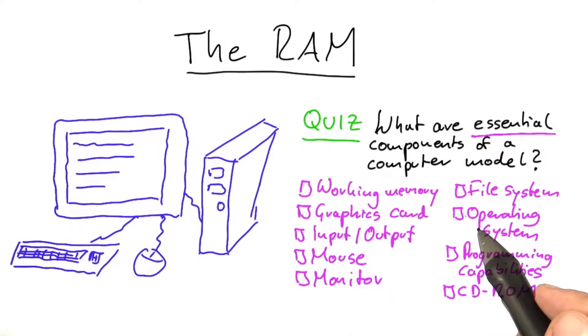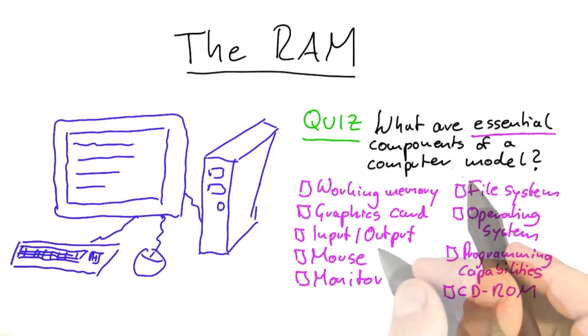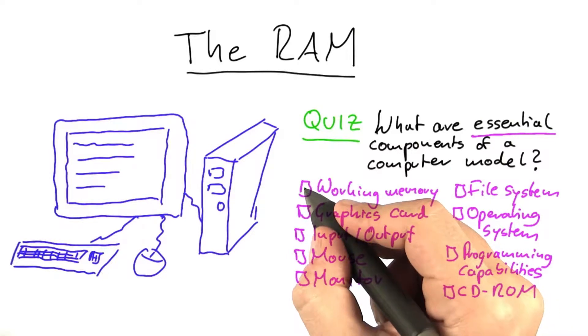Now, of course, the answers to this are a little bit subjective depending on what you want to model, but I think that there are three components that are absolutely essential to keep.